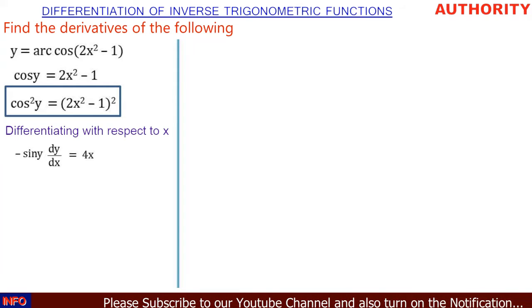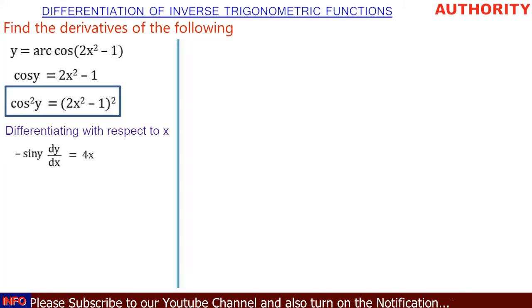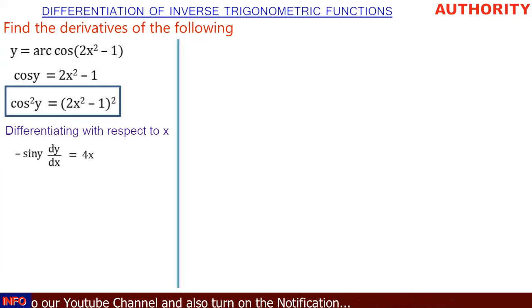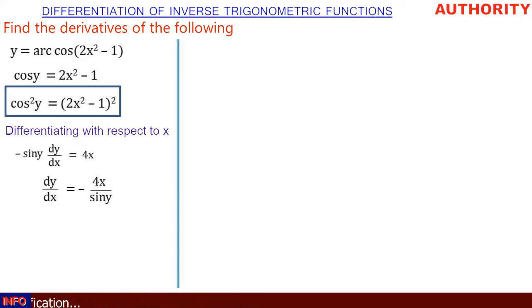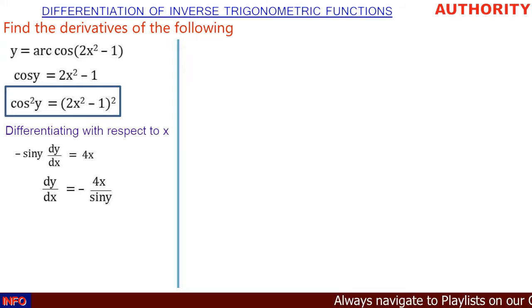Let's make dy/dx the subject — that means we divide both sides by -sin y. So dy/dx = -4x / sin y.